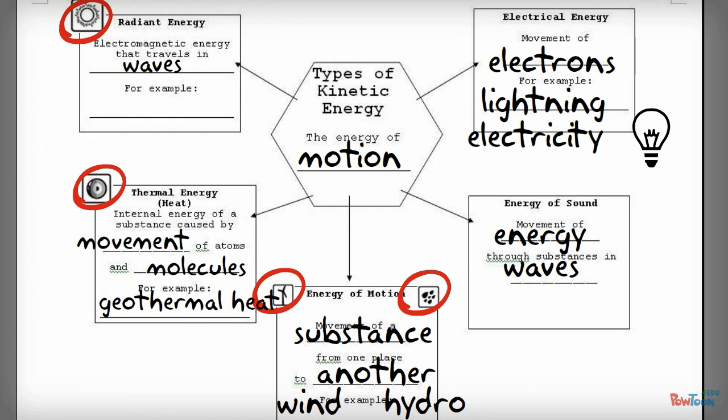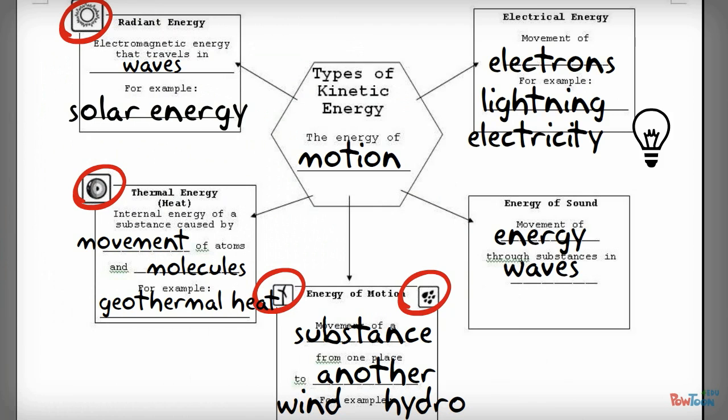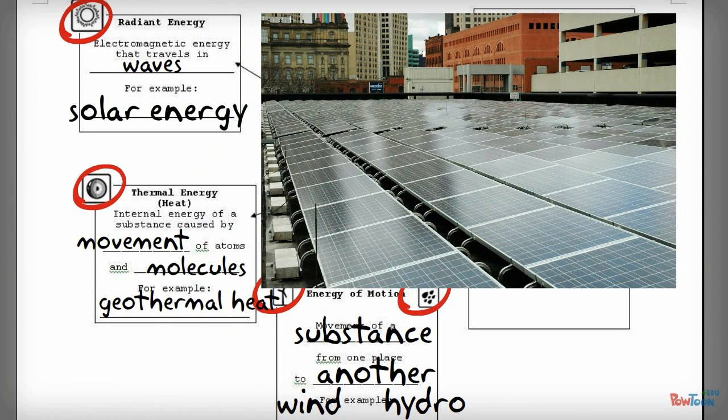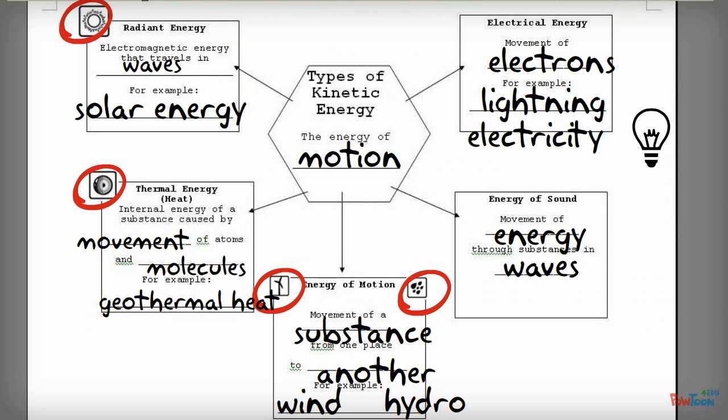but more and more frequently, solar panels are being used to convert this radiant energy from the sun into electrical energy. And there's actually a number of locations in southeast Detroit where these solar panels have started to be installed to do this. So we will sort of jump into more depth and study of these different types of energy and how we encounter them in our daily lives when you get to class.